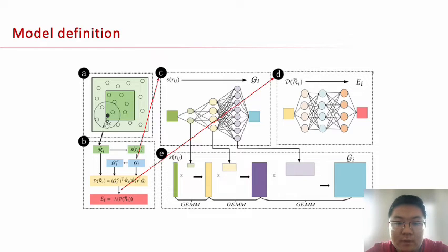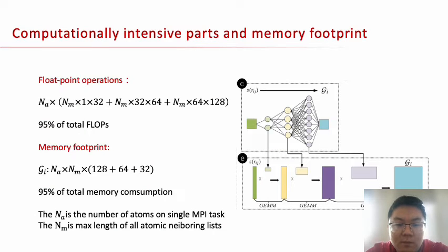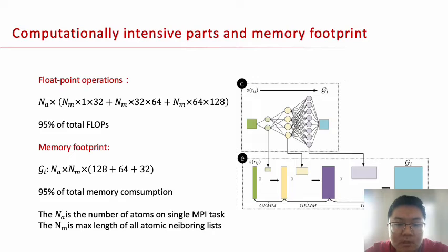Figures C and D show our EmbedNet and FittingNet. In the process above, the EmbedNet is the most time-consuming part, spending more than 90% of total time. The input vector S(Rij) is expanded from Nm to an Nm×128 matrix by three matrix multiplication operations. The floating point operations of the EmbedNet account for approximately 95% of total FLOPs. In addition, the embedding matrix Gi accounts for 95% of total memory consumption.